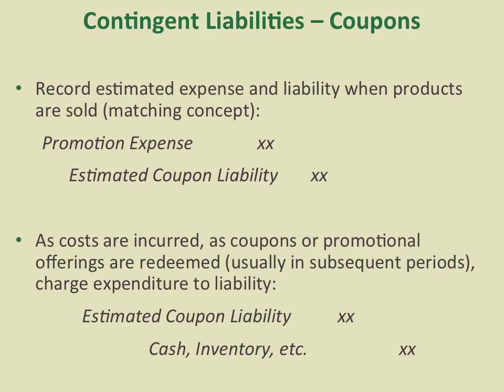The second type of contingent liability is coupons. Coupons are widely used today as an important tool to incentivize future customers to buy. GAAP requires companies that offer coupons to estimate the probability of customers redeeming them and record promotion expenses, crediting estimated coupon liability in the same period when coupons are offered. When coupons are used in subsequent periods, we debit coupon liabilities and credit cash, inventories, etc., depending on the situation.